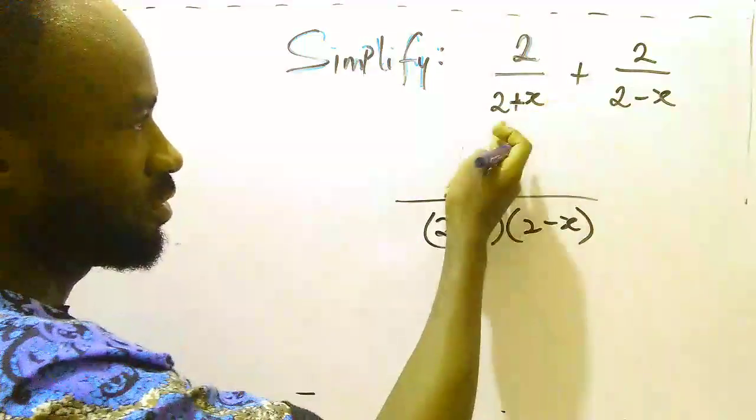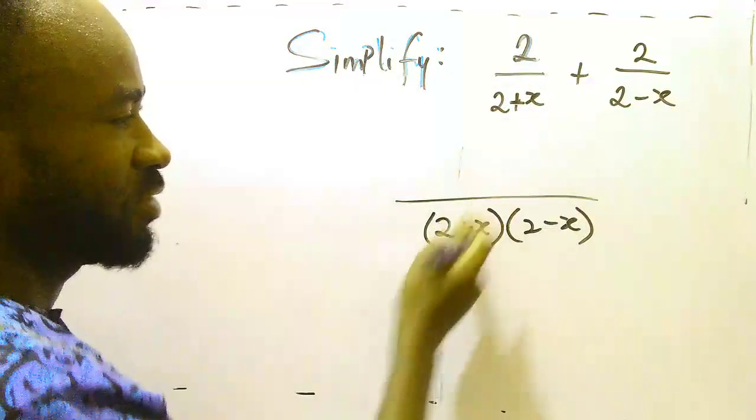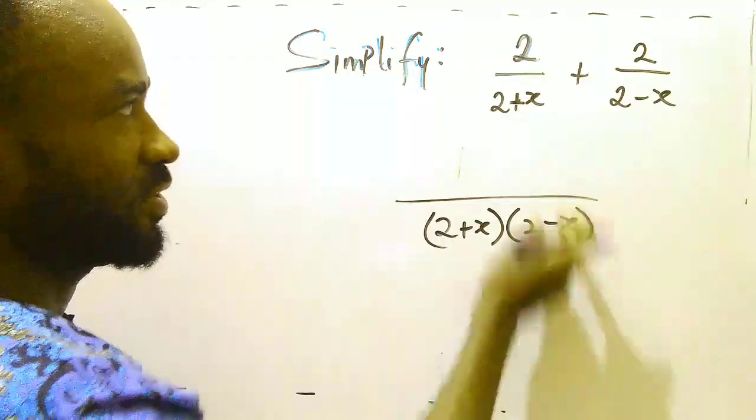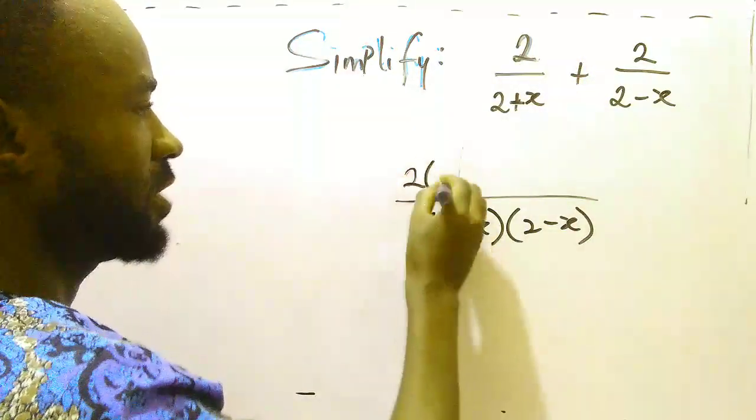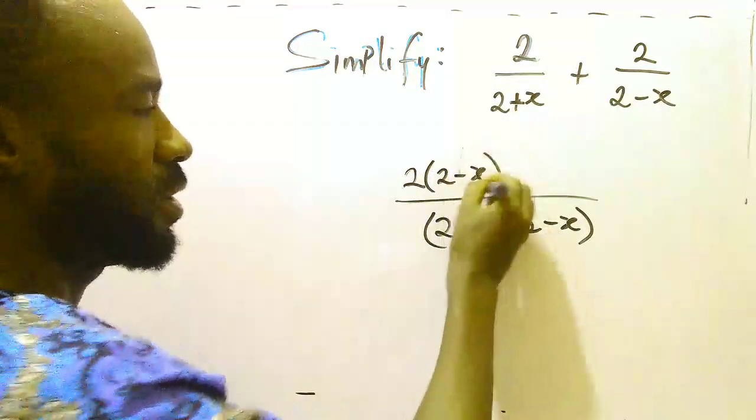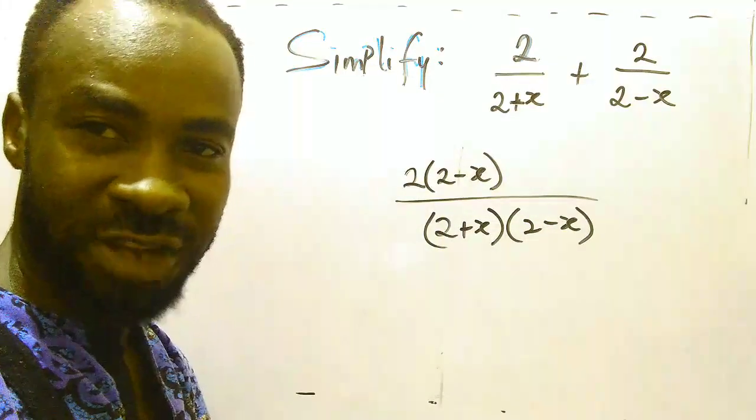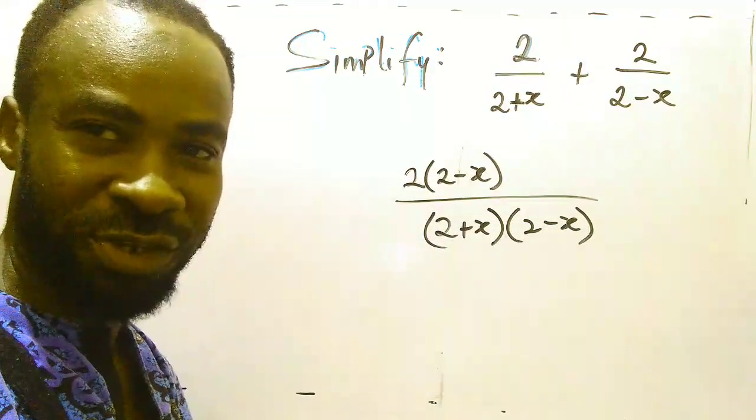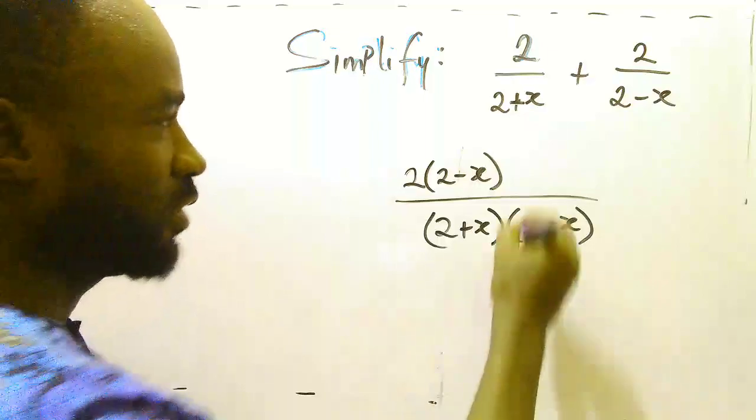Now let's go 2 plus x divided by 2 plus x. We are left with this. Use this to multiply the numerator and that is 2 minus x. So we are solving this the way we solve fractions. If you are not good with fractions you may not understand what we are doing here.